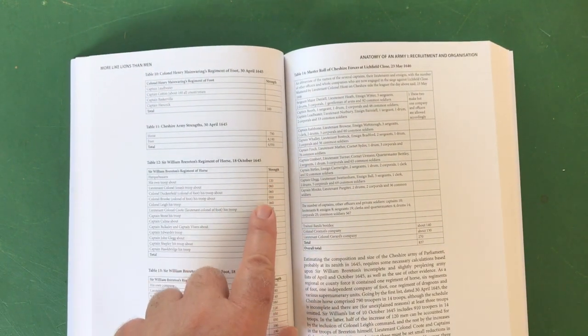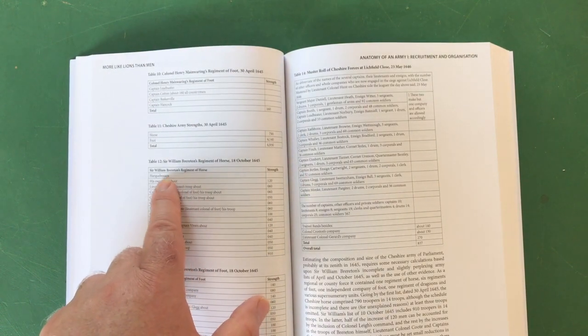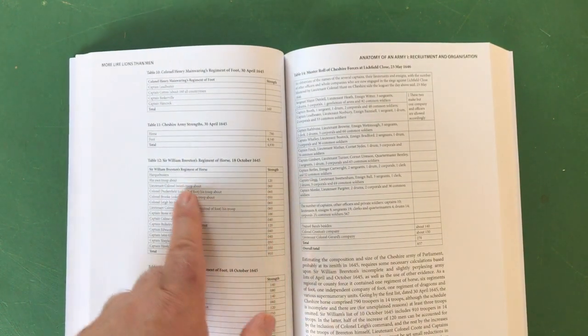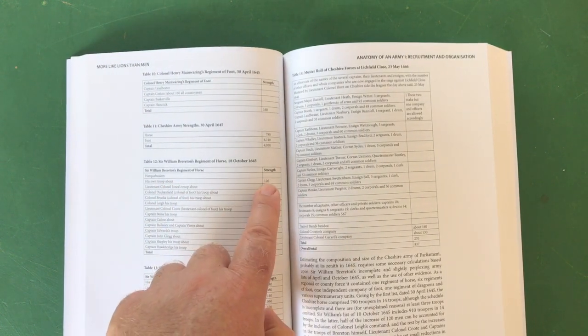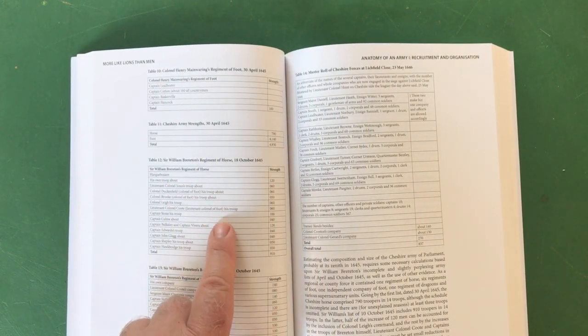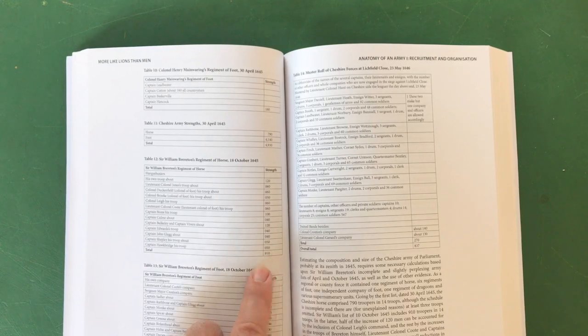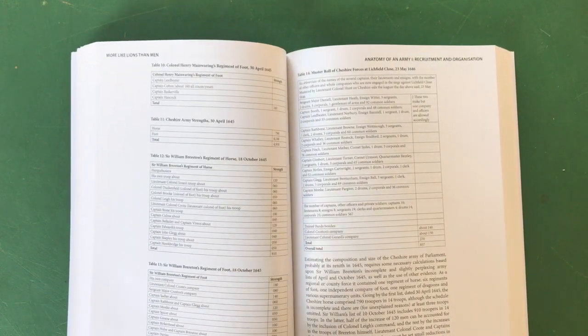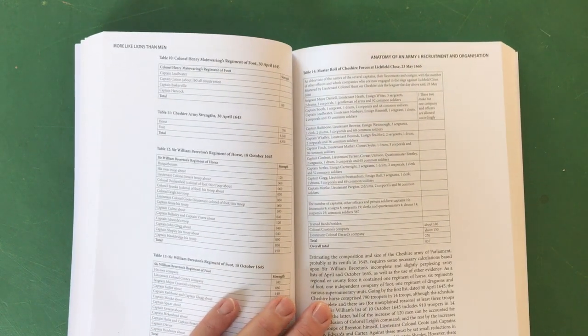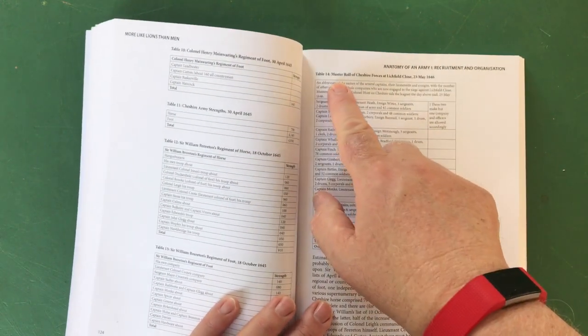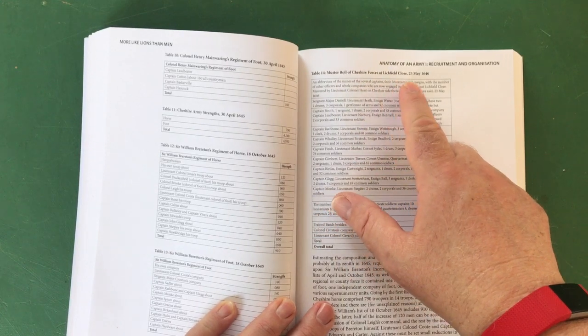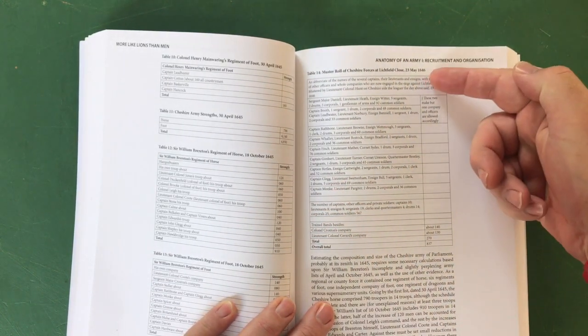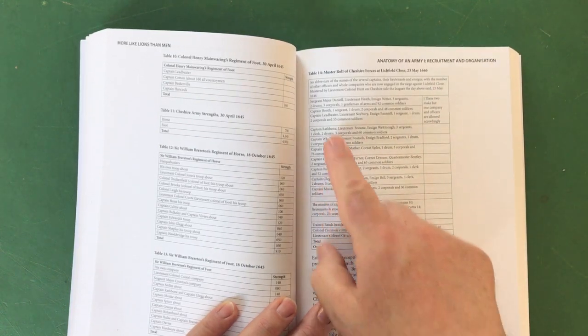Then we go on, we've got comparative numbers: Sir William Brereton's Regiment of Horse from October later that year, October 1645, and again we get the breakdown. We've got arquebusiers, no specific strength given there, but his own troop about 120 men and so on and so forth to 910 men. And then his Regiment of Foot, again another breakdown. And a really fascinating little record here of the muster roll of Cheshire forces at Lichfield Close on the 23rd of May 1646. This is brilliant, look at this.